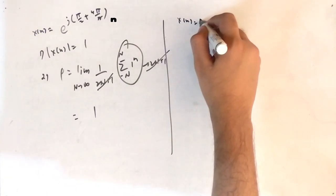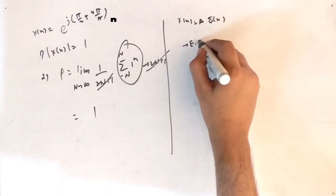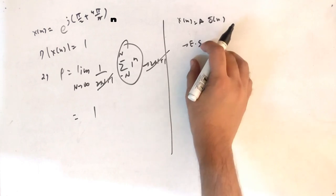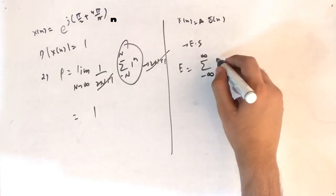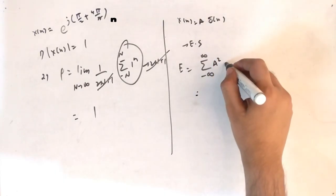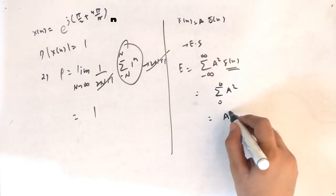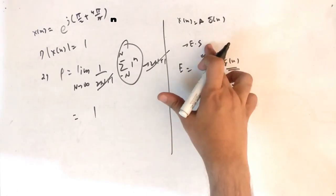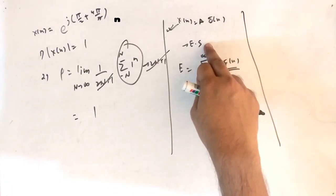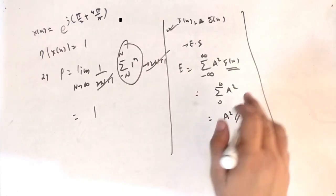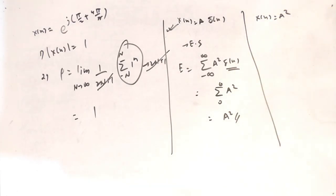Interesting case: x(n) = a · δ(n). Delta is always non-periodic, so it is an energy signal. Energy = summation from −∞ to ∞ of |x(n)|². Since δ(n) is only valid at n = 0, this reduces to a² (only the n=0 term). So energy is constant = a².